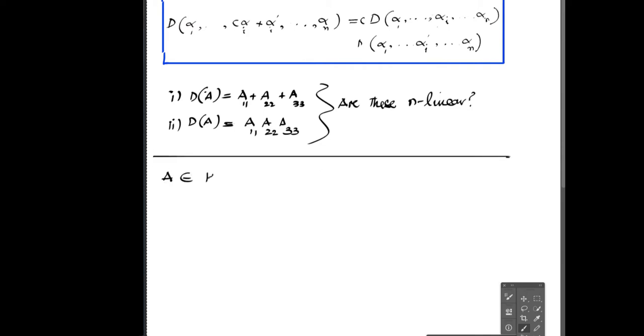If you take A as a generic 3 by 3 matrix, as shown here, then the function D of A becomes a sum of the diagonal terms: a11 plus a22 plus a33. So that would be the first example.